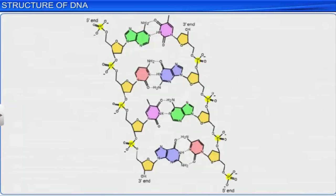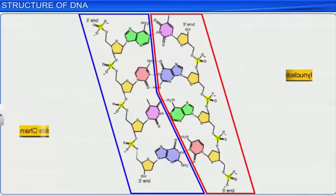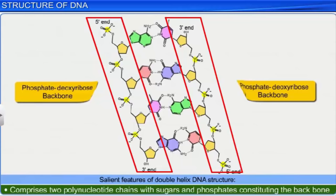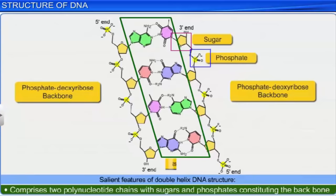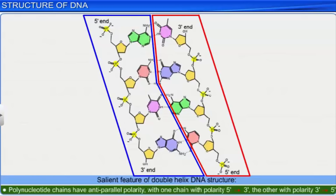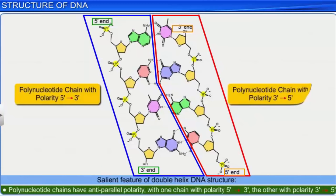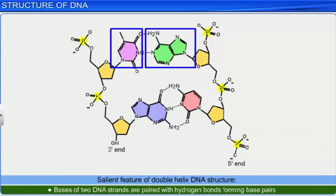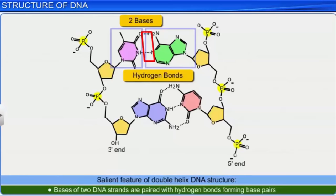A salient feature of the double helix DNA structure is that it comprises two polynucleotide chains, the backbone of which is constituted by sugar-phosphate, with bases projecting inside. The double helix structure has several other salient features too. Its two polynucleotide chains have anti-parallel polarity — that is, if one chain has a polarity 5'→3', the other has 3'→5'. Moreover, the bases of the two DNA strands are paired with the help of hydrogen bonds, forming base pairs.